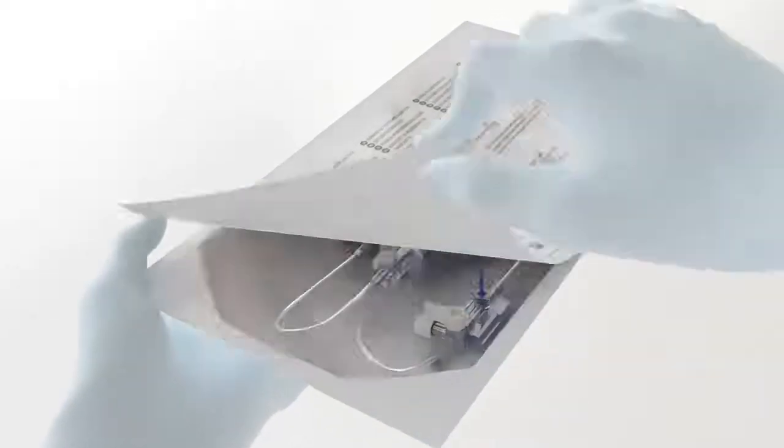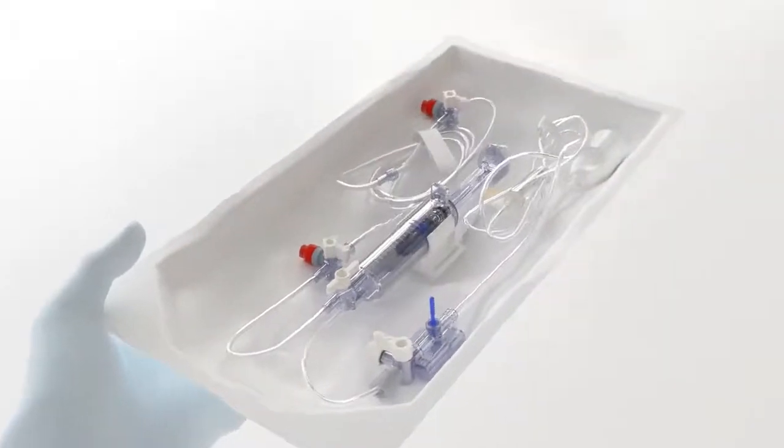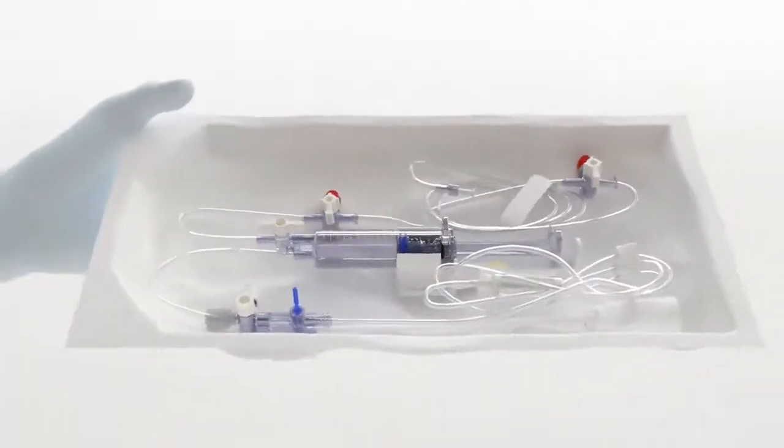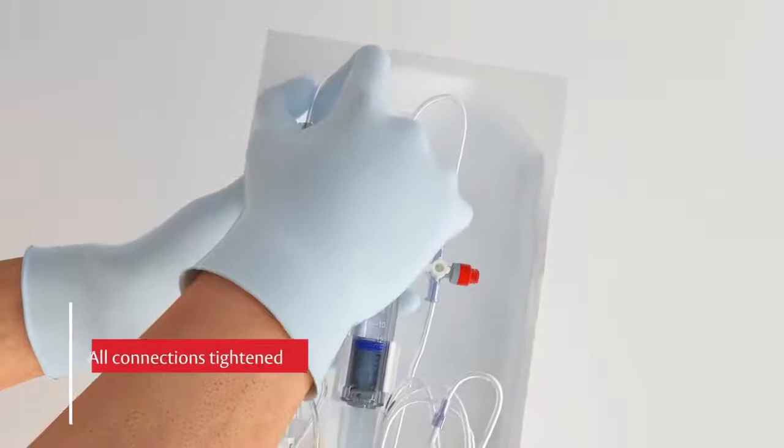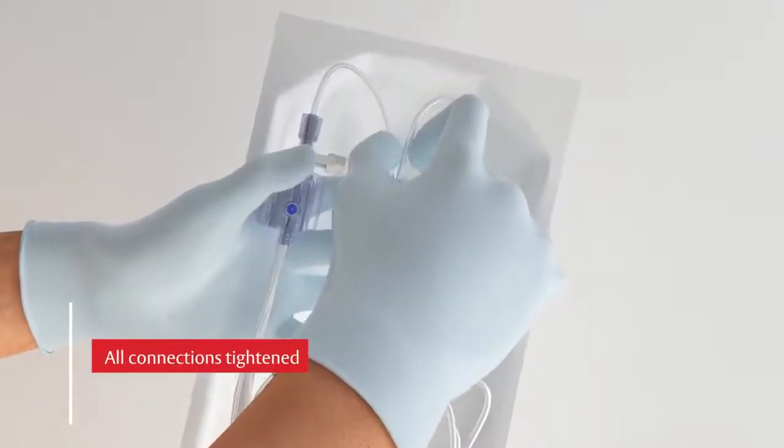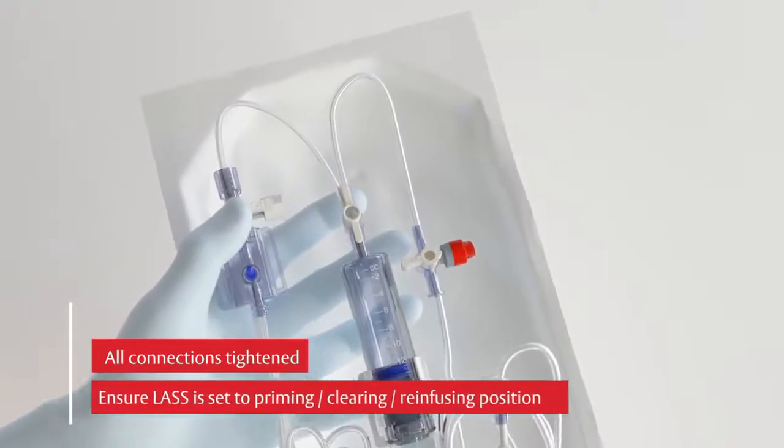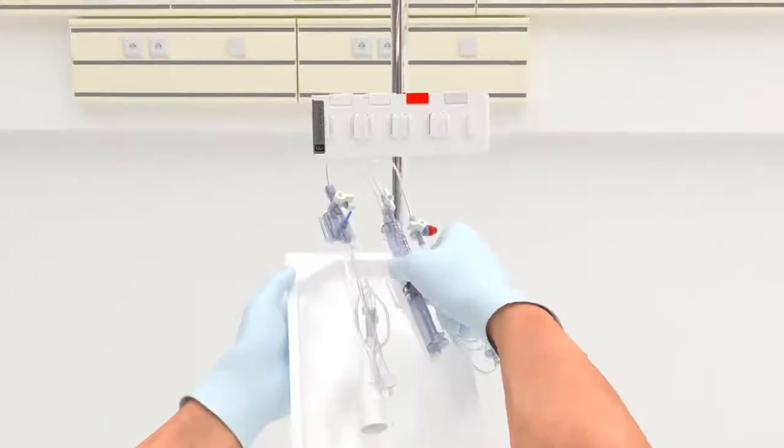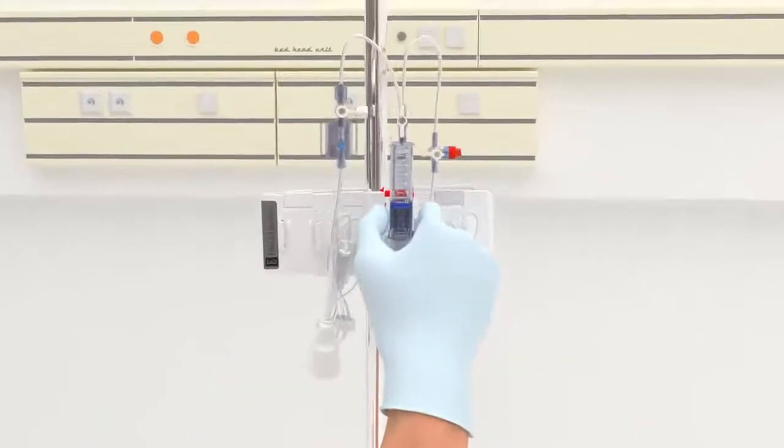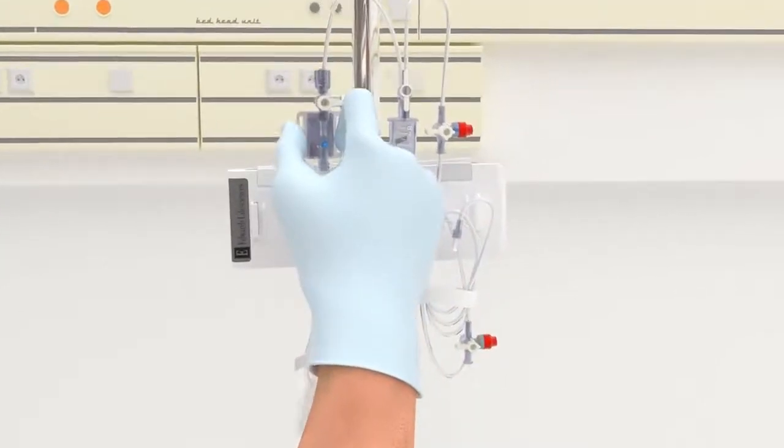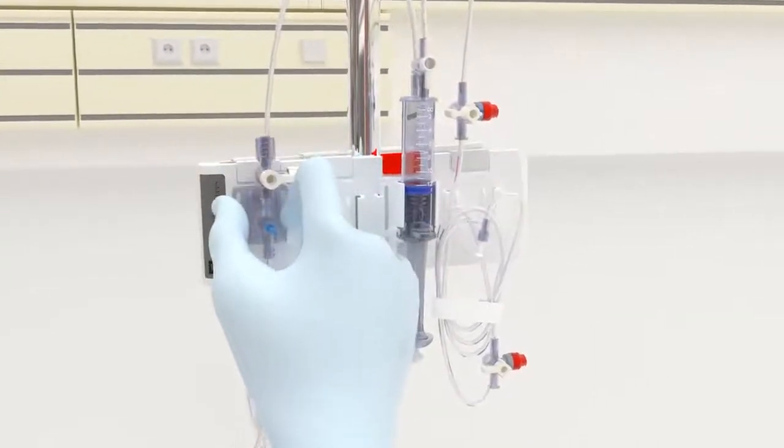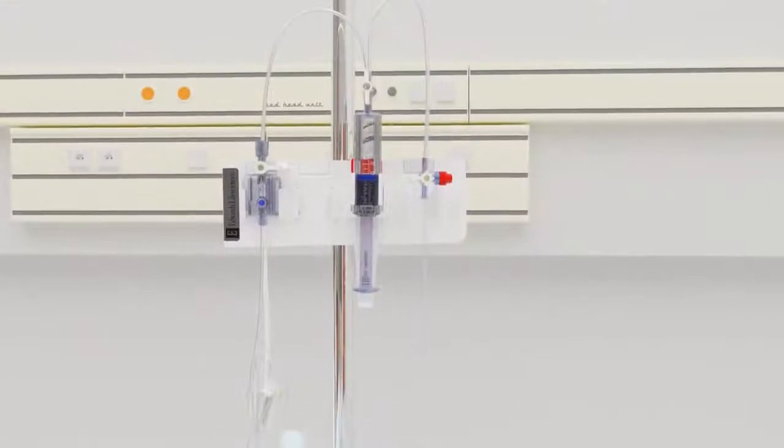To begin, remove the VAMP Plus system from the package using aseptic technique. All connections should be checked, secured, and tightened. Ensure the lure activated sample site is set to the prime clear position. Next, mount the VAMP Plus system on the IV pole or simply set the reservoir on the bed next to the patient.